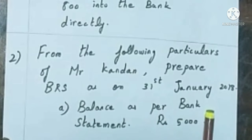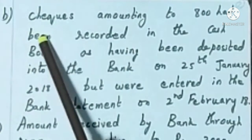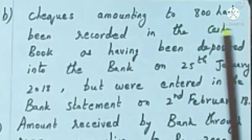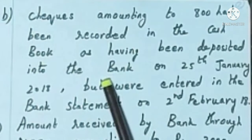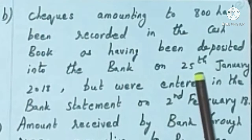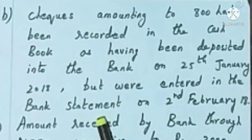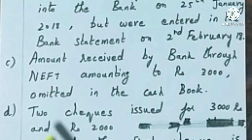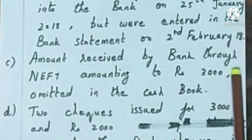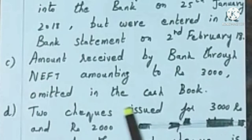Balances Per Bank Statement: Rs. 5000. Checks amounting to Rs. 800 had been recorded in the cashbook and deposited into the bank on 25th January 2018, but were entered in the bank statement on 2nd February 2018. Amount received by bank through net banking transaction amounting to Rs. 3000 omitted in the cashbook.